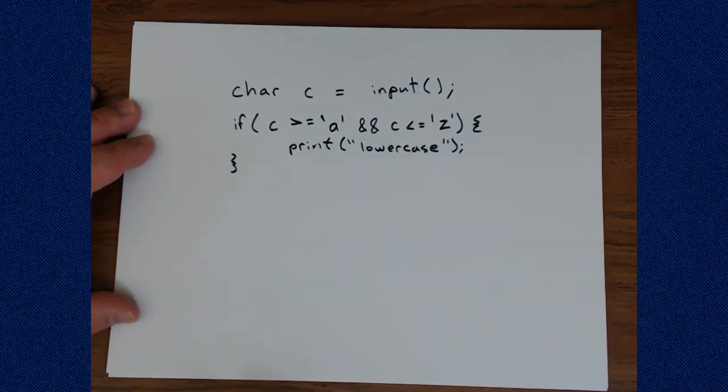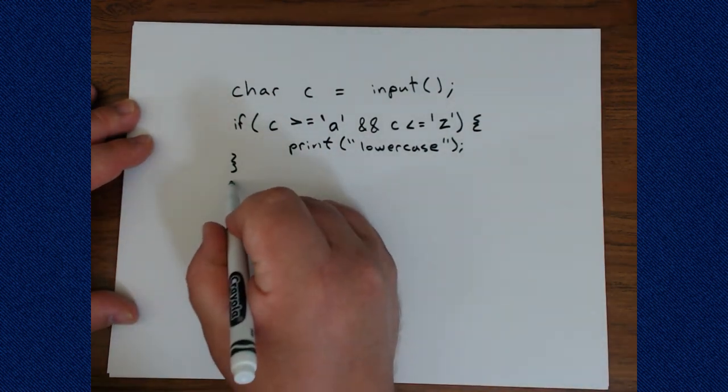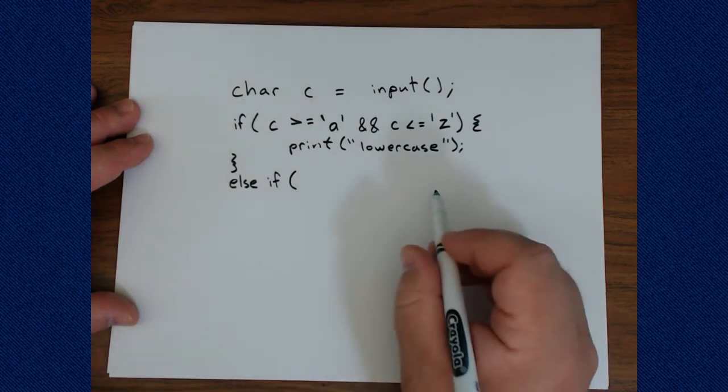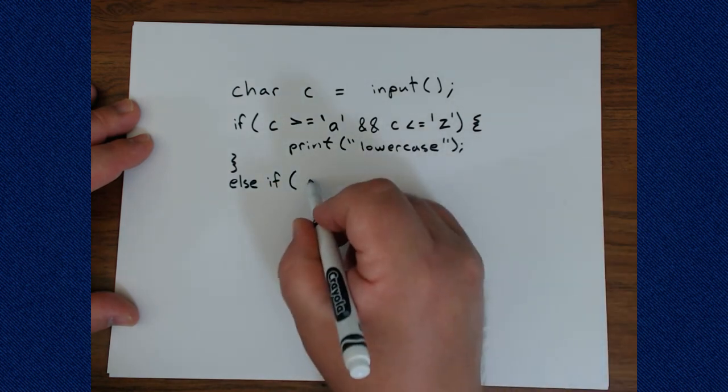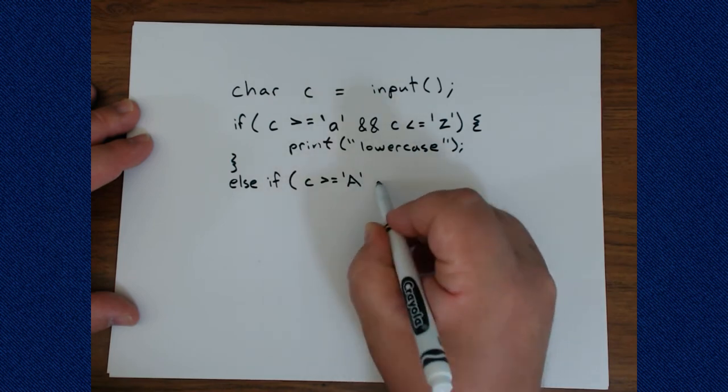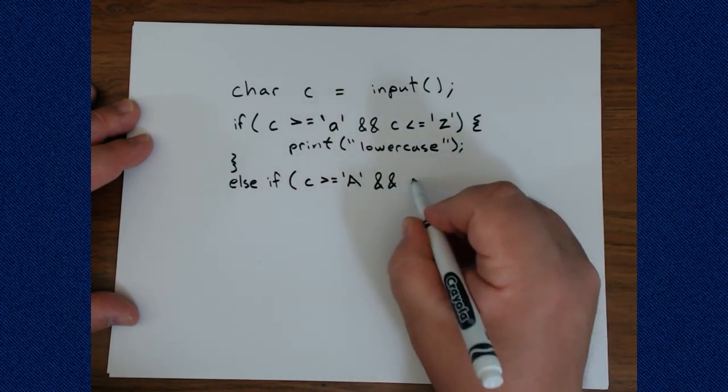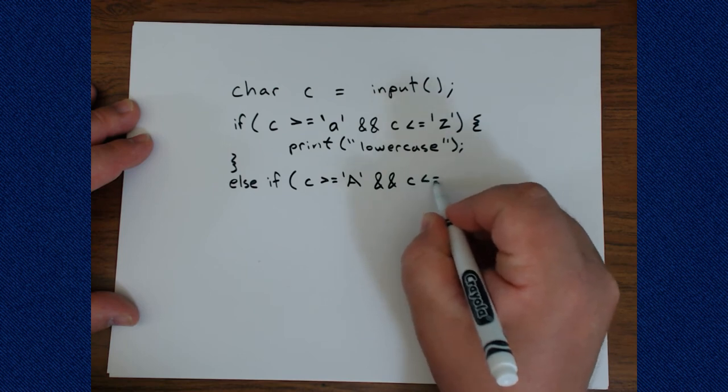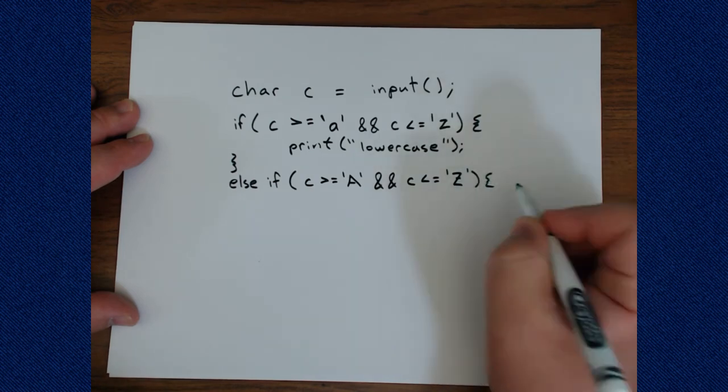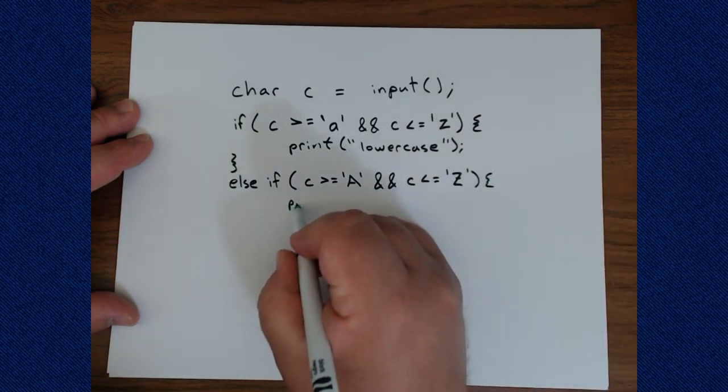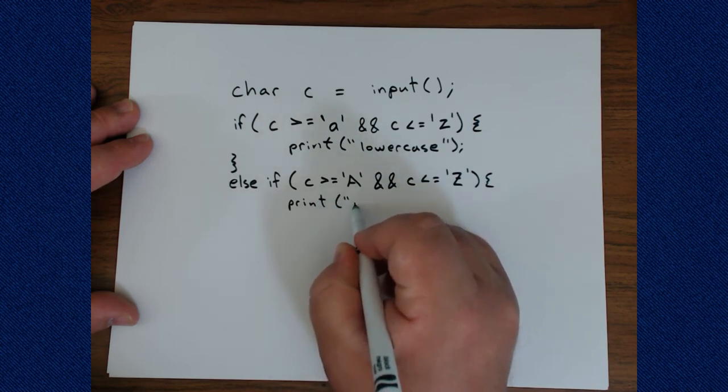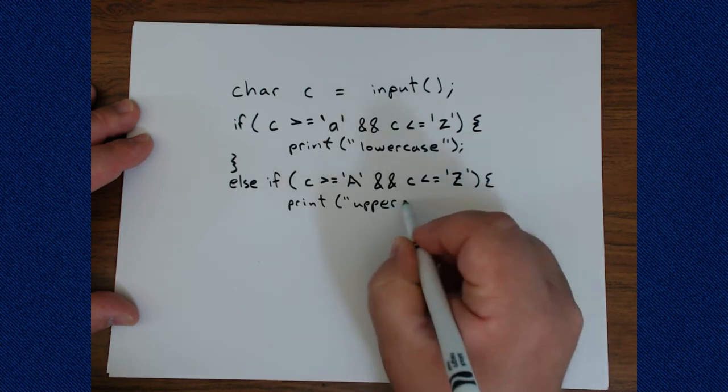Now if it's not lowercase, it might be uppercase. So we could check for that too. So we'll say else if. And we just define the range through comparisons. So if C is greater than or equal to capital A, and C is less than or equal to capital Z. And then we could indicate that this is actually an uppercase character. So we could say uppercase.